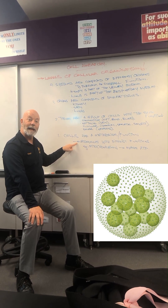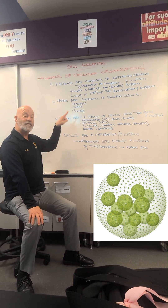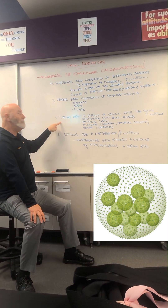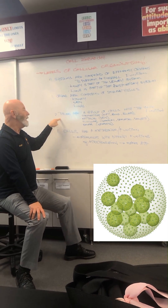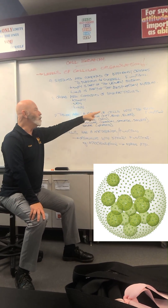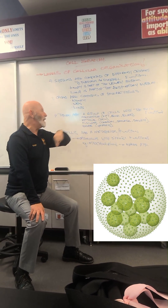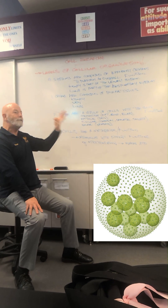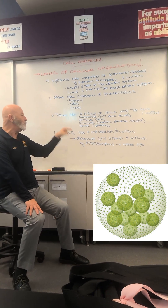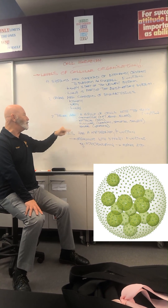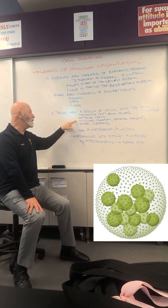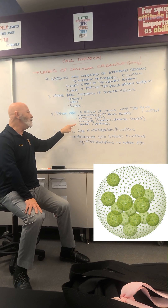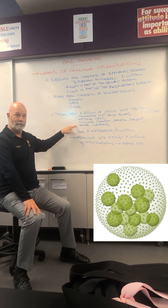The second stage is tissues, which are made up of a group of cells with the same function. There are four types of tissue: connective tissue, epithelial tissue, muscular tissue, and neural tissue.